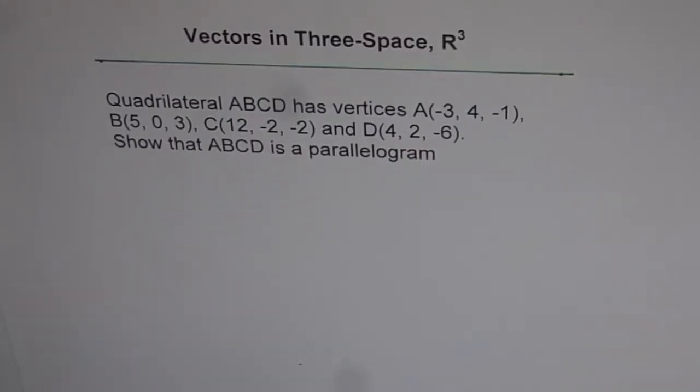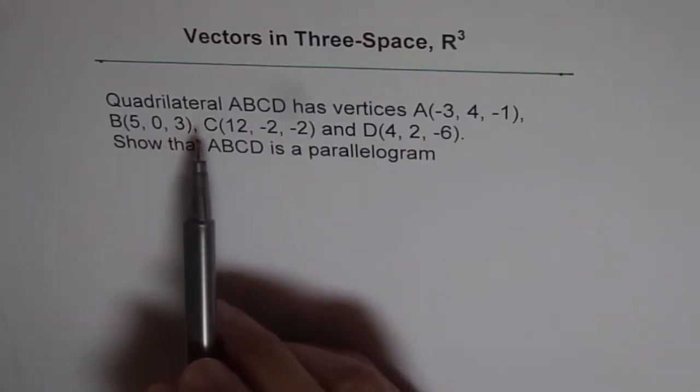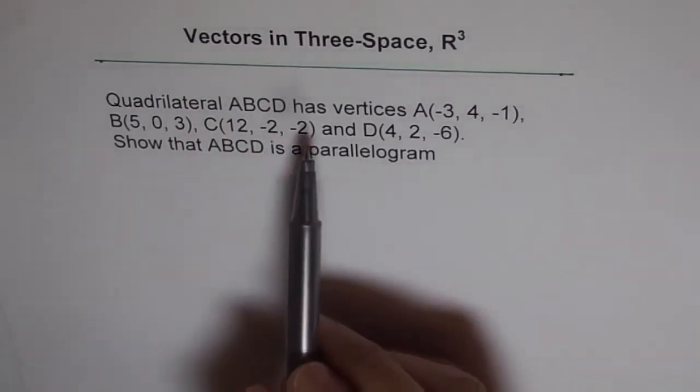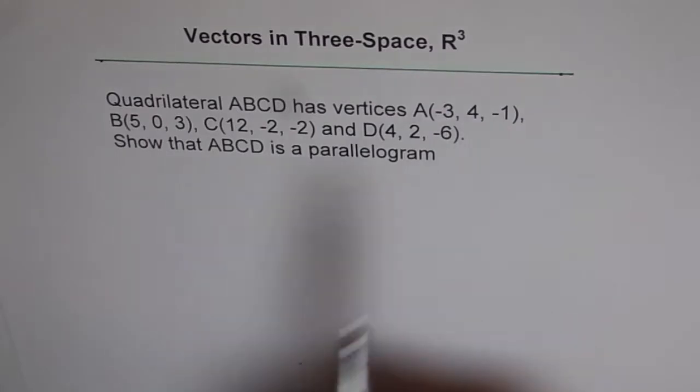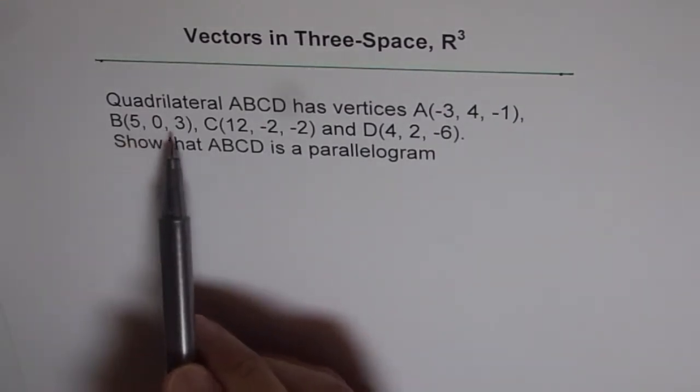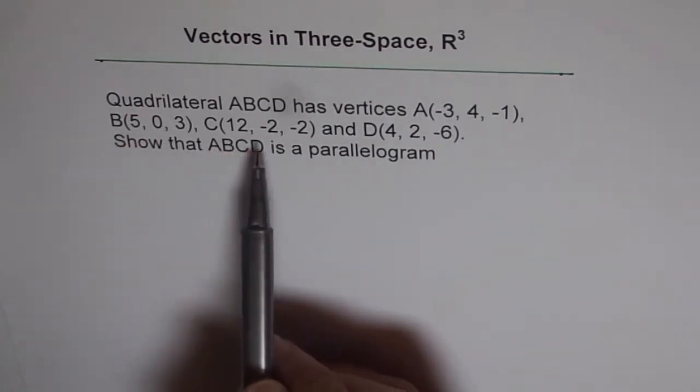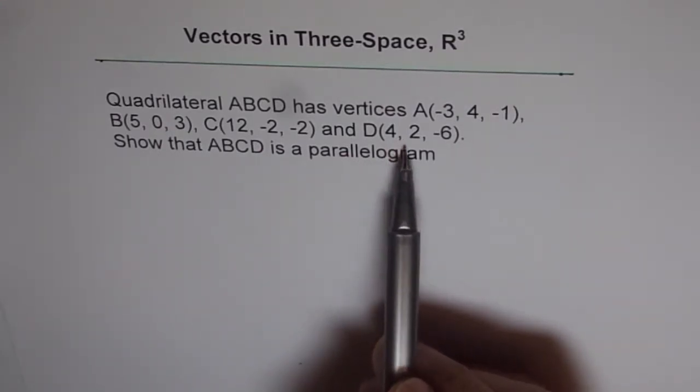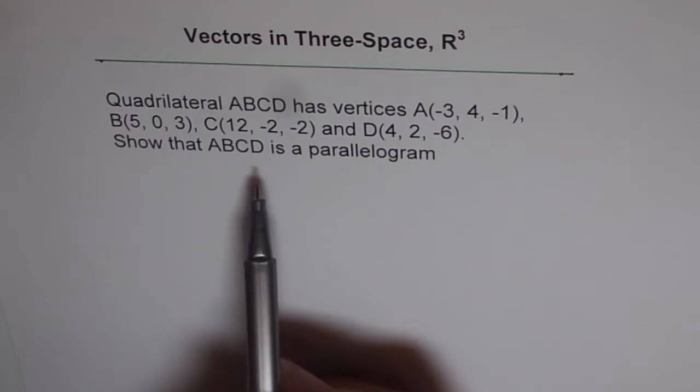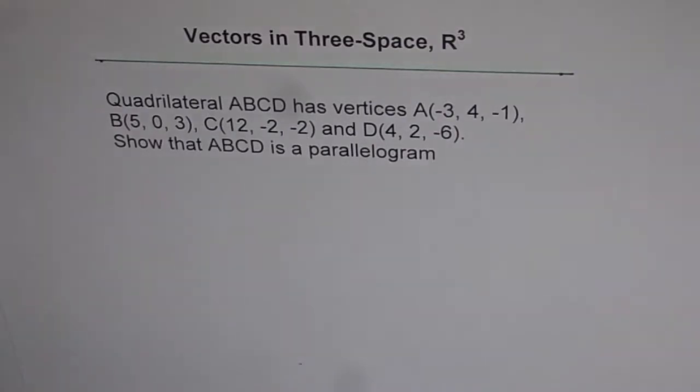Vectors in 3-space, R³. Quadrilateral ABCD has vertices A(-3, 4, -1), B(5, 0, 3), C(12, -2, -2), and D(4, 2, -6). Show that ABCD is a parallelogram.